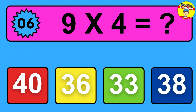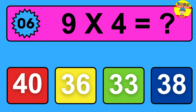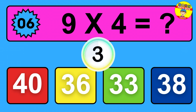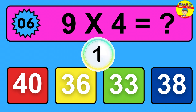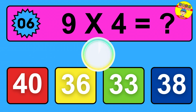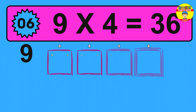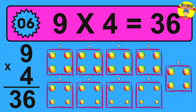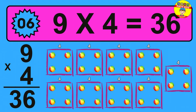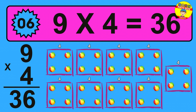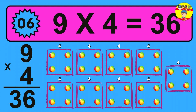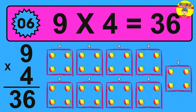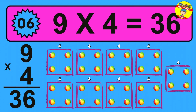Question 6: 9 times 4 equals what? The answer is 9 times 4 is 36. To calculate, we have 9 groups with 4 balls each one. So how many balls do we have?